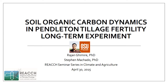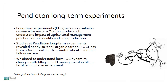Oregon State University, Columbia Basin Agricultural Research Center have several long term experiments established in the past. These long term experiments serve as a valuable resource for Eastern Oregon producers to understand the impact of agricultural management practices on soil quality and crop production. Studies at the Pendleton Long Term Experiment revealed nearly 50% soil organic carbon loss from 0 to 60 cm soil depth in a winter wheat summer fallow system.